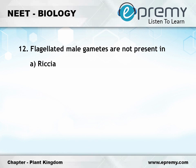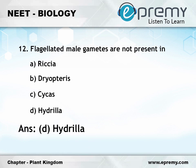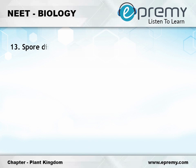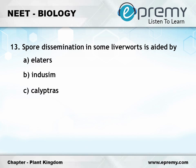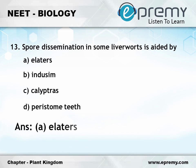...option A Riccia, option B Dryopteris, option C Cycas, option D Hydrilla. The answer is option D Hydrilla. Question number thirteen: spore dissemination in some liverworts is aided by option A elaters, option B indusium, option C calyptra, option D peristome teeth. The answer is option A elaters.